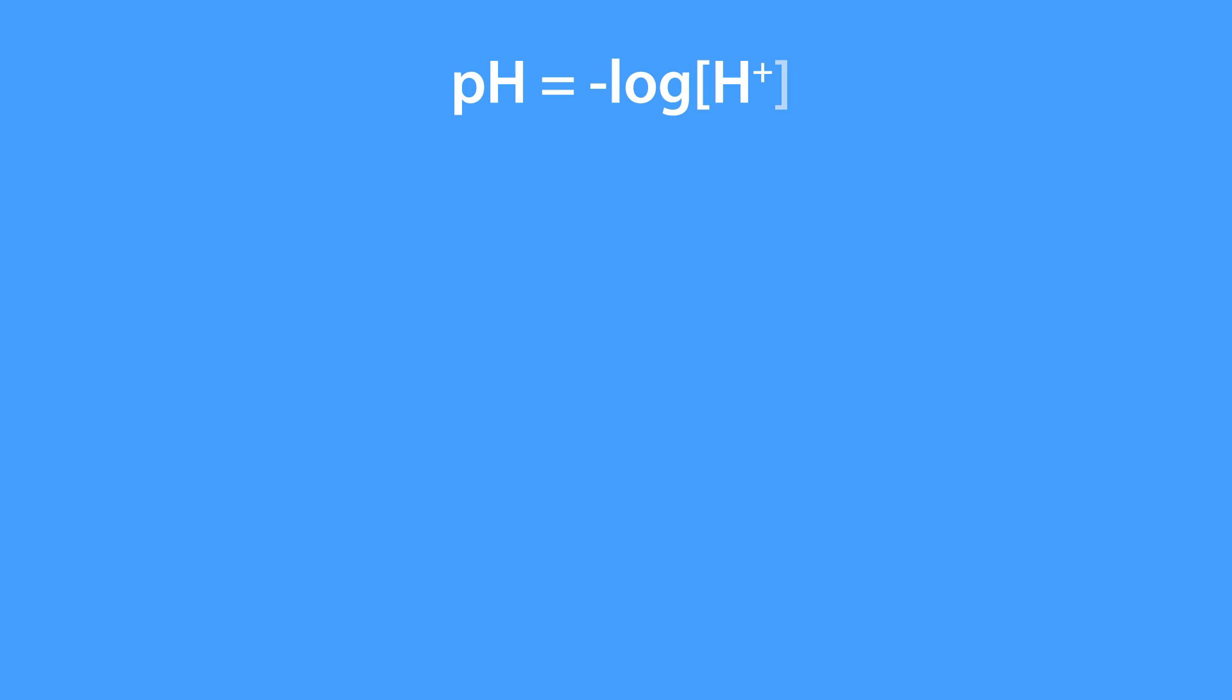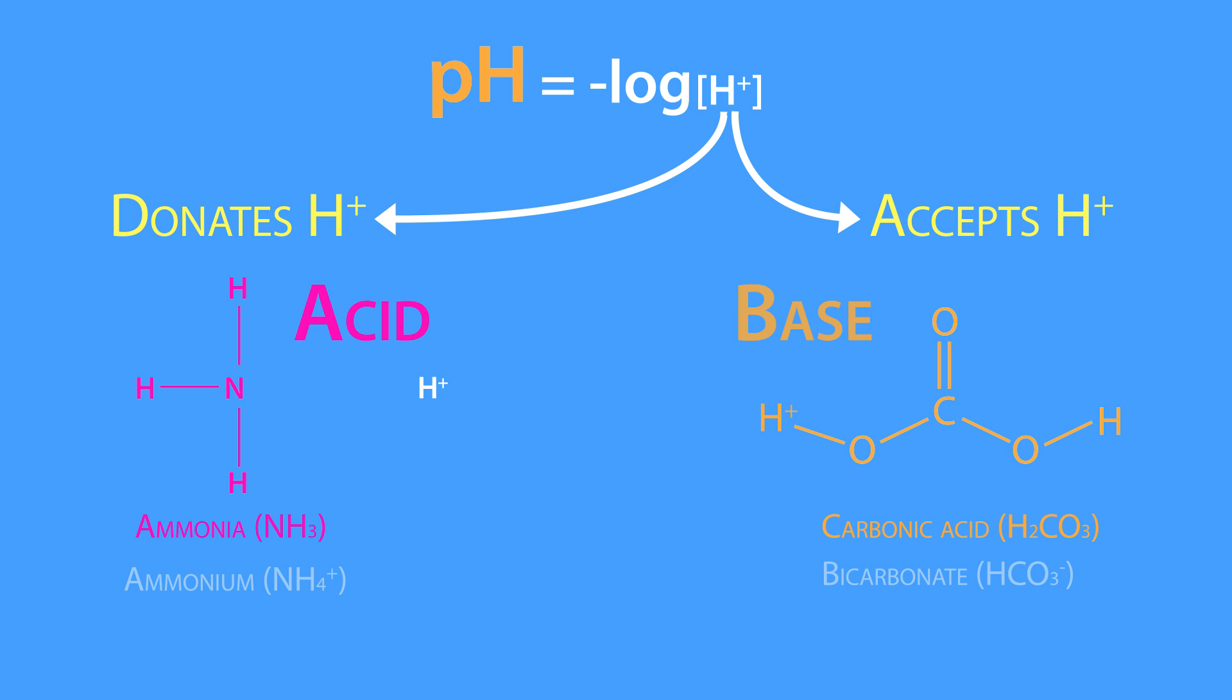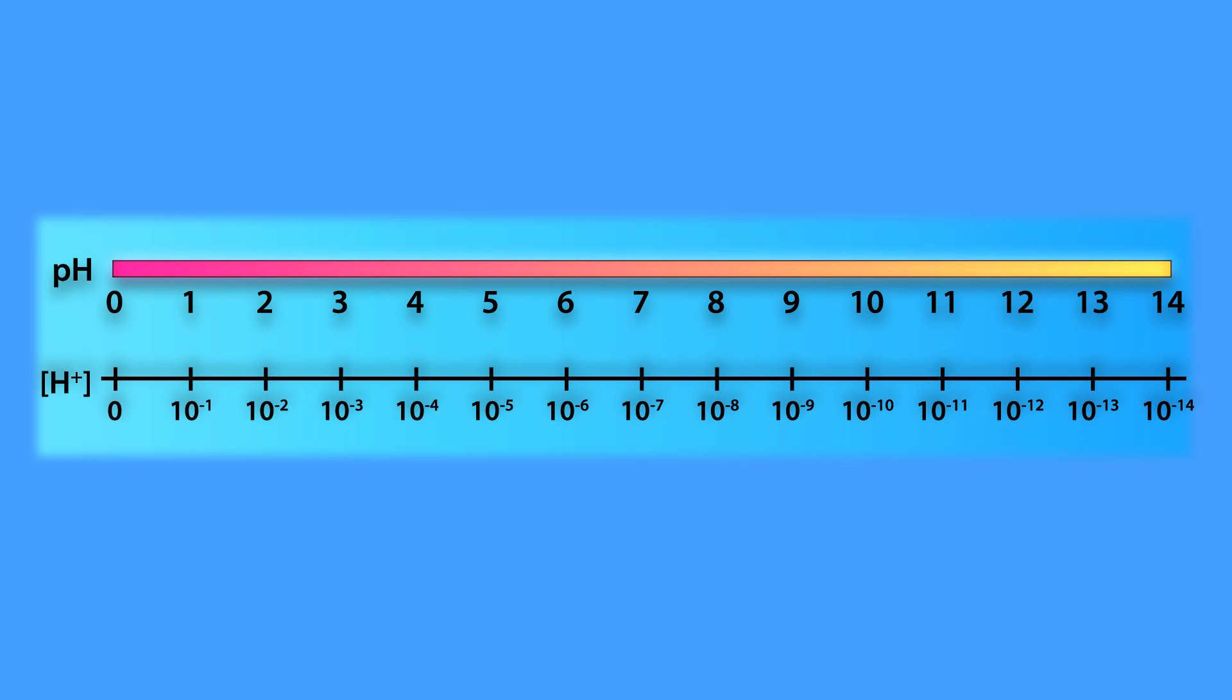Now since pH is a function of the hydrogen ion concentration, we should mention that any molecule that donates a hydrogen ion is considered an acid, while any molecule that accepts a hydrogen ion is considered a base. With that in mind, let's review how the plasma pH is kept within a narrow range.